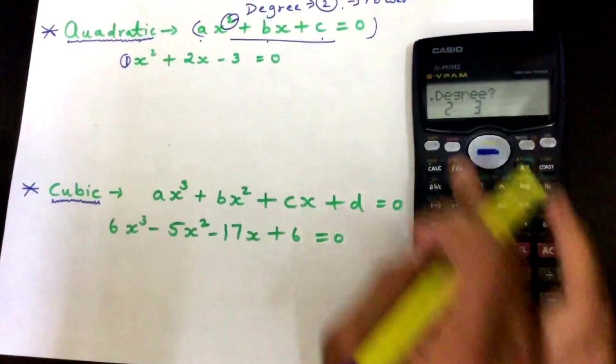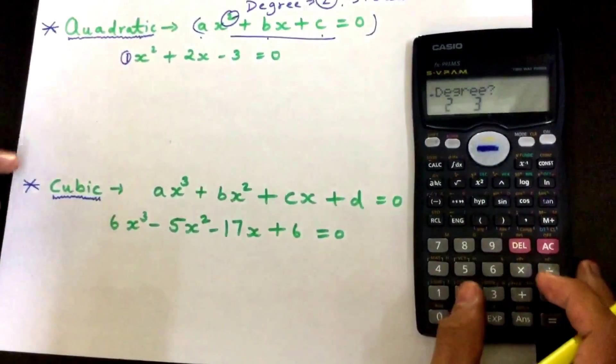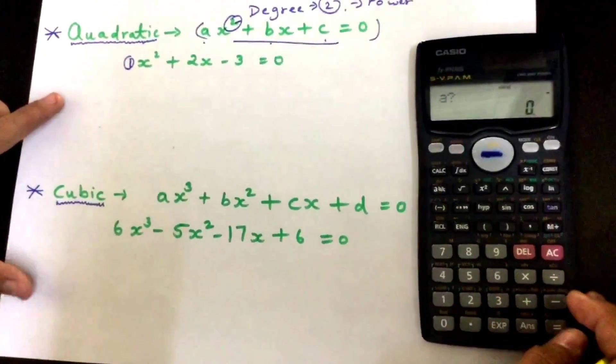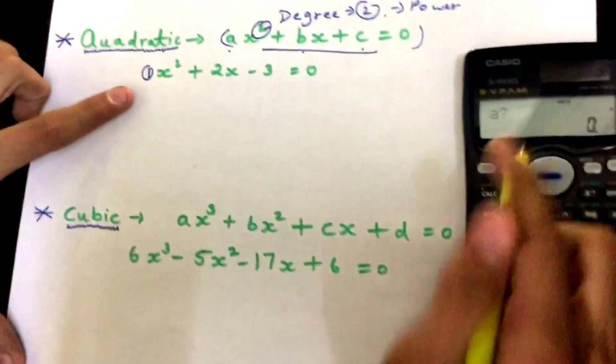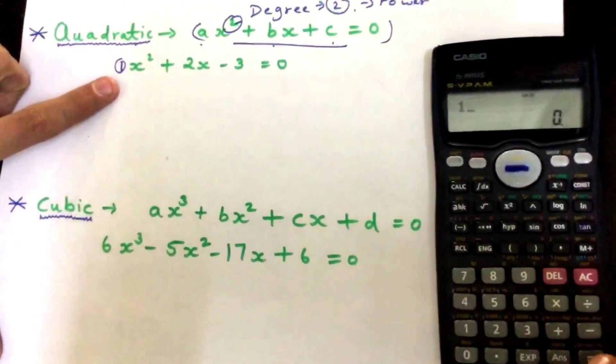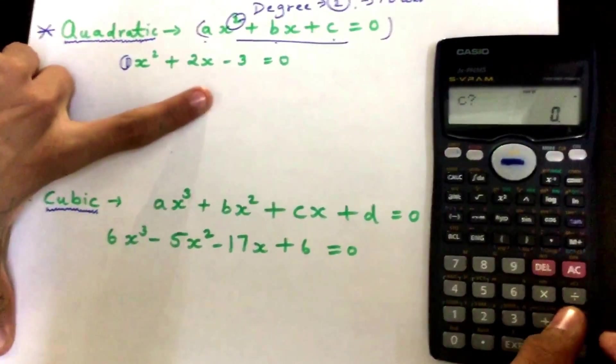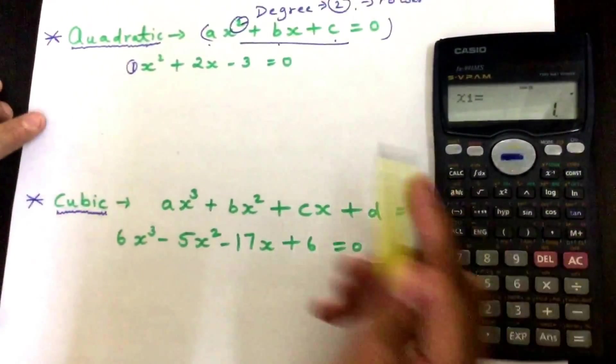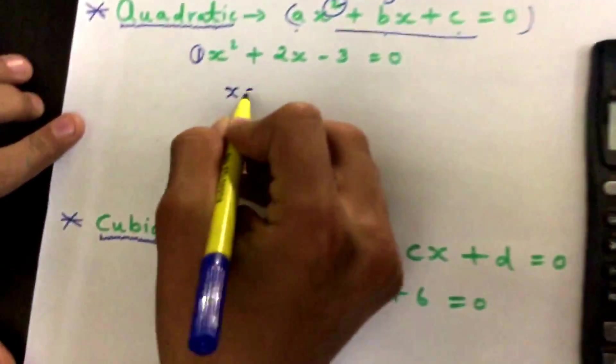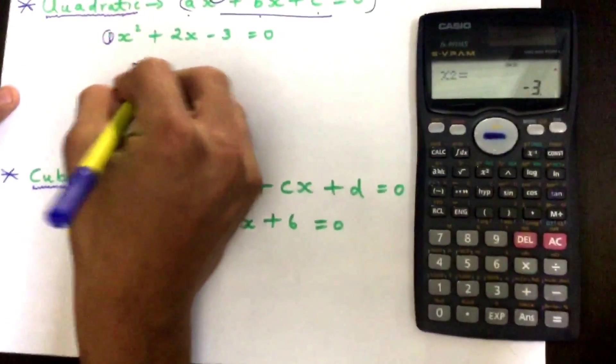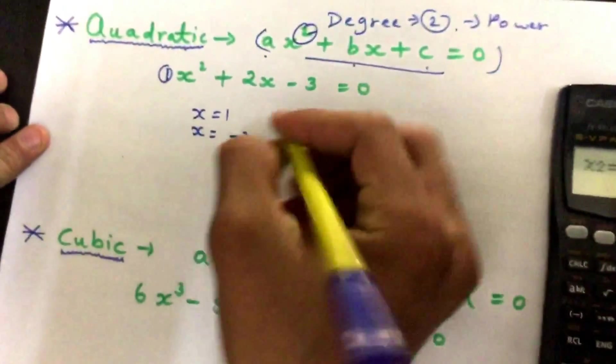Press the right button and get the degree. This is degree, so press two for degree two. The coefficient a equals one, b equals two, and c equals minus three. We're going to get the answer: x equals one and x equals minus three.